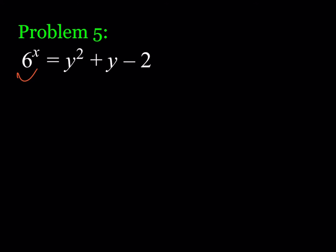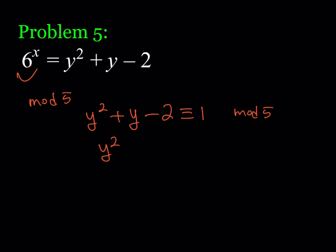Looking at the expression in mod 5: 5^x ≡ 0 (mod 5), so 1 to the power x is 1. We should get y² + y − 2 ≡ 1 (mod 5). Adding 2 to both sides gives y² + y ≡ 3 (mod 5), a quadratic in mod 5 that can be solved by checking residues.